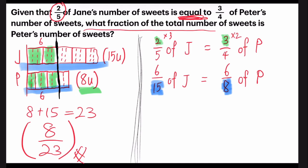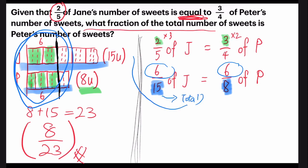So if you recall, why do we have to change them into the same numerator of six and six? We are trying to make them into equal parts, like we have done just now for our model drawing. That's the reason why we are changing it to the same numerator. And the denominator is the total units that Jane and Peter have.